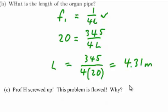Finally, Part C indicates that this problem is somehow flawed. Well that seems funny—we were easily able to solve for the frequency f1, we were also very easily able to solve for the length. What could possibly be wrong?